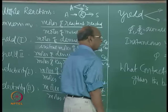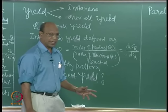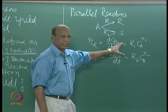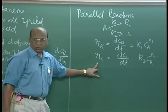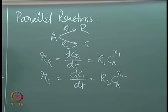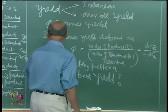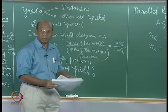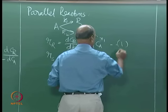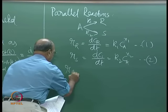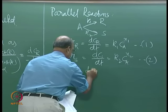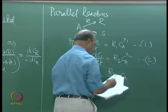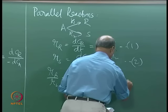Even though we have defined yield, to discuss which contacting pattern is best, the argument is the same. I take the ratio rR/rS = dCR/dCS = (k1/k2)·CA^(n1−n2). This is equation 3. Our goal is to maximize this ratio so that we get maximum R — meaning rS should be minimum.